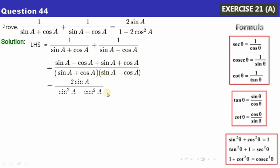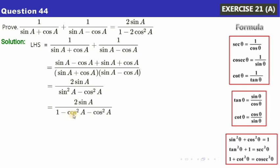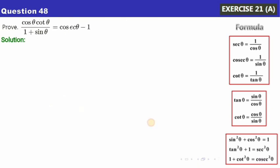The denominator is (sinA plus cosA)(sinA minus cosA) = sin²A minus cos²A, using the difference of squares formula. We substitute sin²A = 1 minus cos²A, so the denominator becomes 1 minus cos²A minus cos²A = 1 minus 2cos²A. This gives us 2sinA/(1 minus 2cos²A), which is the required right-hand side. You may pause and note the solution.